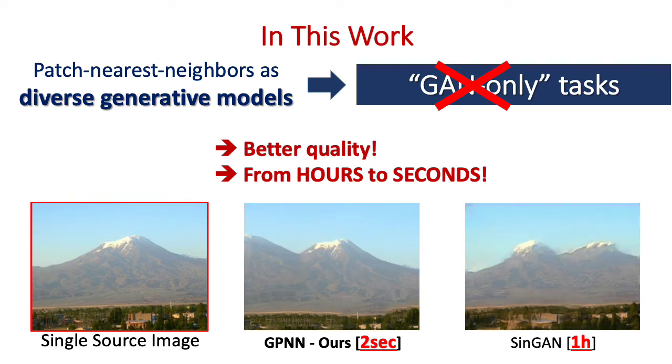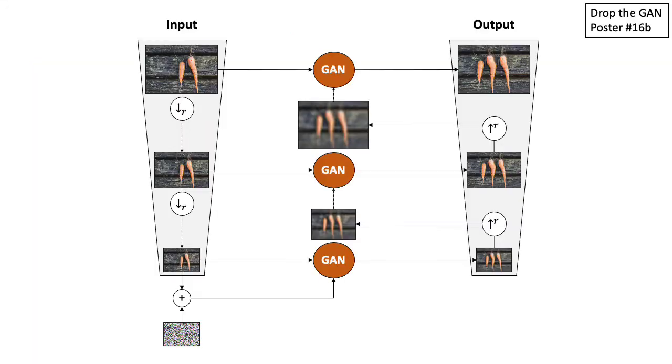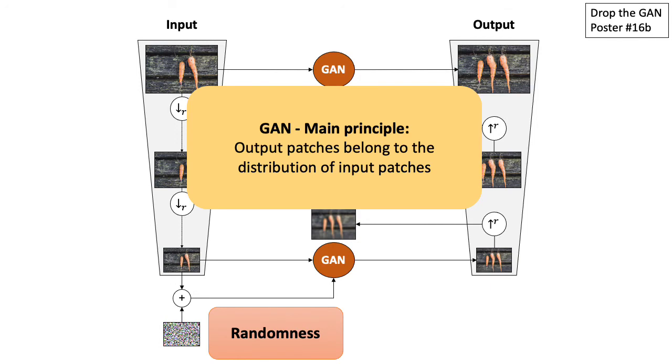But how can patches nearest neighbors be used to solve such tasks? Consider the SinGAN architecture, a multi-scale GAN with noise injected into the coarsest level. In essence, it outputs an image with patches that belong to the input's patch distribution.